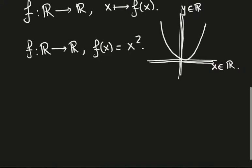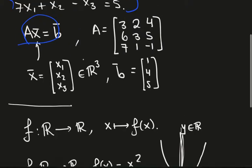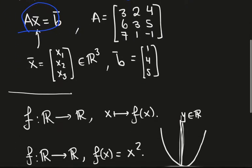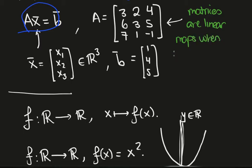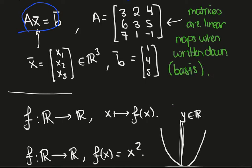This is just a geometric way of representing the way in which this function maps this axis here, this copy of the real line, onto another copy of the real line. So let's see how we can relate it to some type of map. The way to think about it will be that matrices are the maps when we write them down. Matrices are linear maps when written down. By written down, we need to introduce the notion of a basis to make this notion precise. We won't do that here.